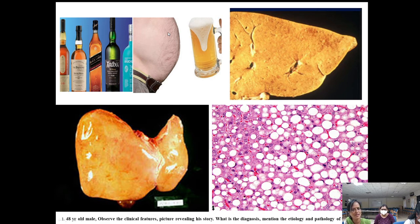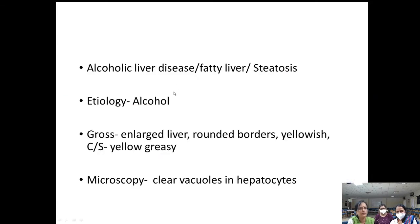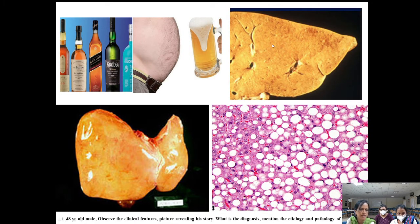We used the phrase 'ever pregnant, never delivered' to describe a protruding abdomen full of fat — not pregnancy. The answer was alcoholic liver disease or fatty liver/steatosis, with alcohol as etiology. Grossly, the liver showed enlarged size, rounded borders, and on cut section a yellowish, greasy appearance.